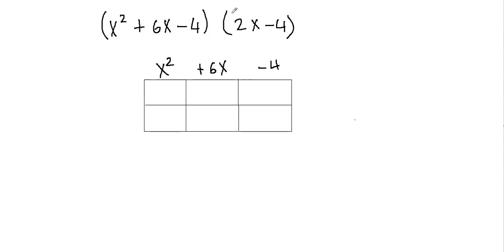Now I'll take my second polynomial and put that vertically on the side. So I have 2x minus 4. And it really doesn't matter which one goes on the side and which one goes on the top. You can switch between them.